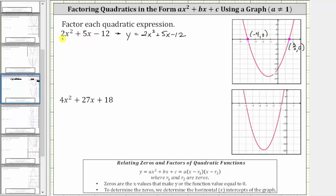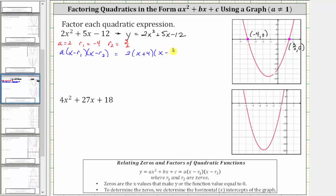To write the given expression in the form a times the quantity x minus r sub one times the quantity x minus r sub two: we know a, the coefficient of x squared, is two; r sub one is negative four; and r sub two is three halves. Which means the given expression is equal to two times the quantity x minus negative four, which simplifies to x plus four, times the quantity x minus three halves. While this would be considered factored form, we normally don't leave fractions in our binomials, so we can distribute the two into the quantity x minus three halves to clear the fraction.